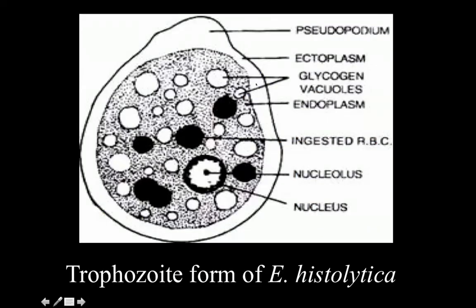This slide shows the trophozoite form. The trophozoites are motile structures; they have a clear area which is the ectoplasm, and this clear area is thrown out as a pseudopodium, making this organism motile. It has a granular inner portion known as the endoplasm. The endoplasm contains glycogen vacuoles and ingested RBCs. These ingested RBCs present in the trophozoite are the most important diagnostic feature of the trophozoite of Entamoeba histolytica.